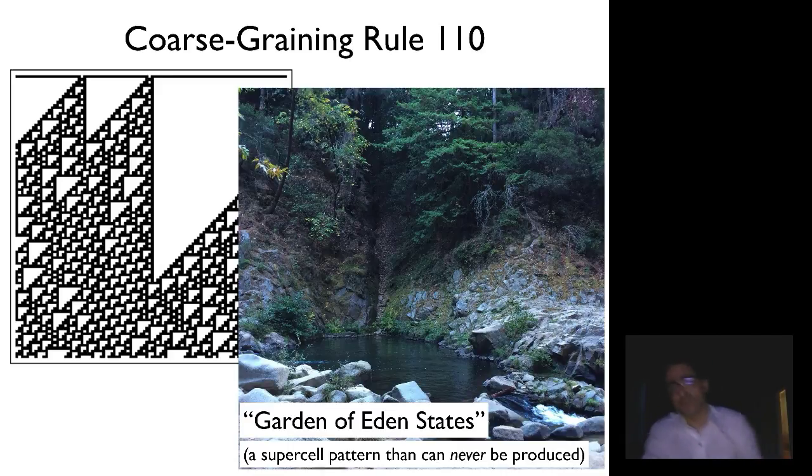So, the thing about rule 110, and this is often true for cellular automata, is that there are certain supercell patterns that can never be produced by the evolution rule. You can program them in, you can code them in the initial conditions, so they appear at step 0, but they immediately disappear when you get to step 1, and they never reappear no matter what else is going on in the system. These are these Garden of Eden states. So Garden of Eden here meaning they might exist at the beginning, but the system never will produce them naturally.